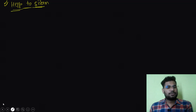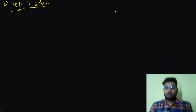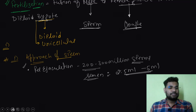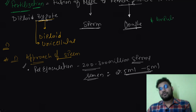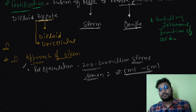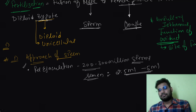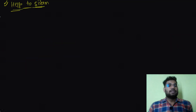One important thing to be aware of is the site of fertilization. The ampullary-isthmus junction of the oviduct is the site of fertilization. That is something very important to understand.